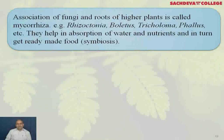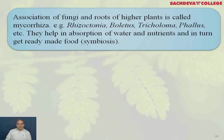Association of fungi with roots of higher plants is called mycorrhiza. Examples include Rhizoctonia, Boletus, Trichoderma, and Phallus. They help in absorption of water and nutrients, and in turn get ready-made food — this is called a symbiotic relationship.